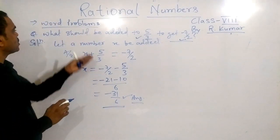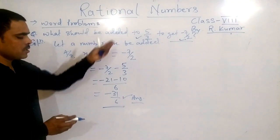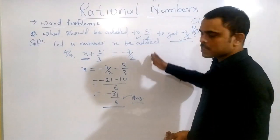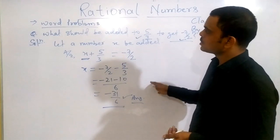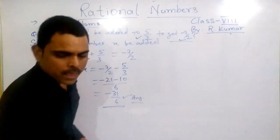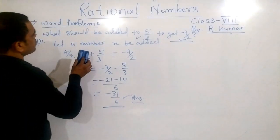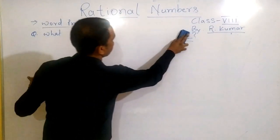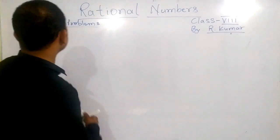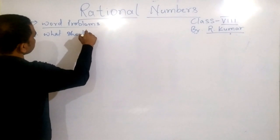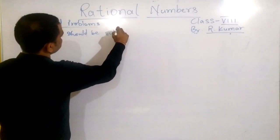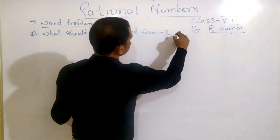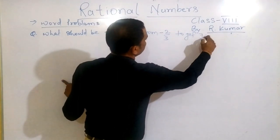Now in the same way, this was based on addition - what should be added. The similar type of question you will get in subtraction also. I am giving you another question: what should be subtracted from minus 2 by 3 to get 7 by 6?